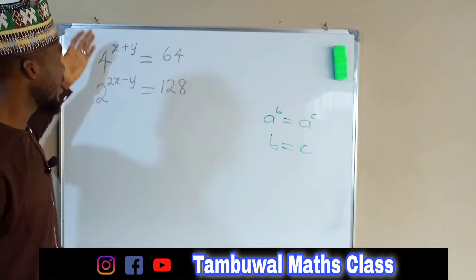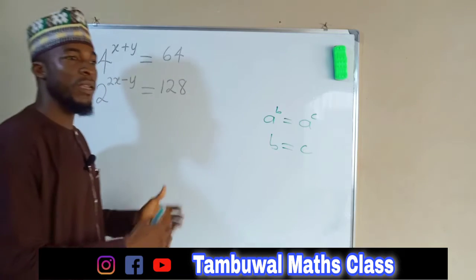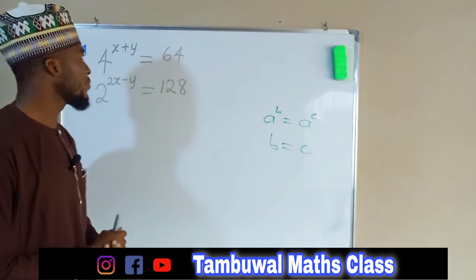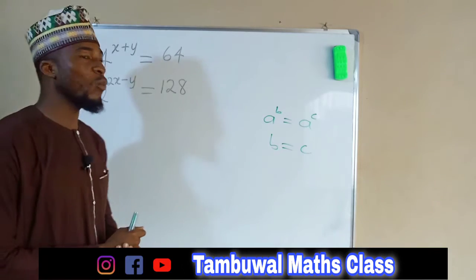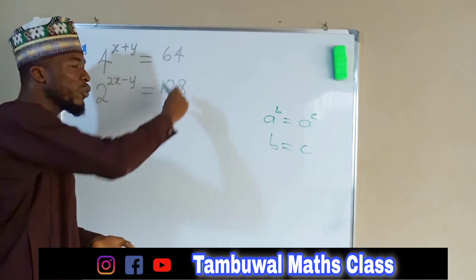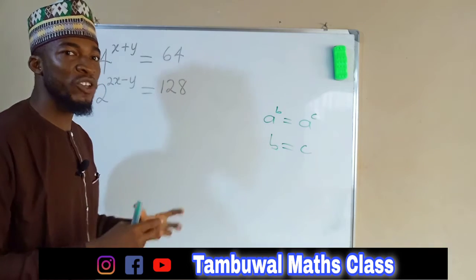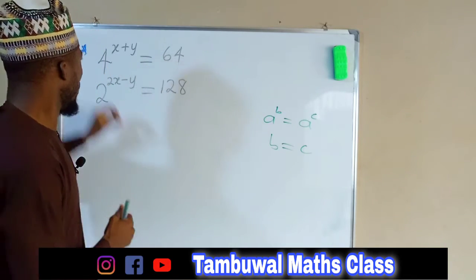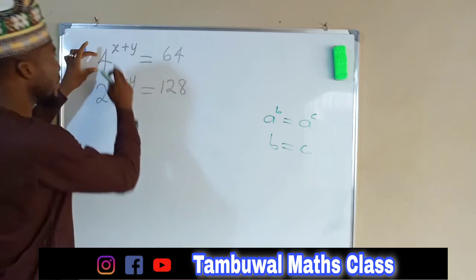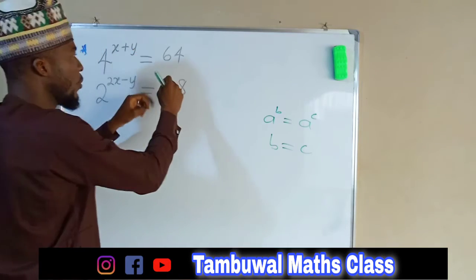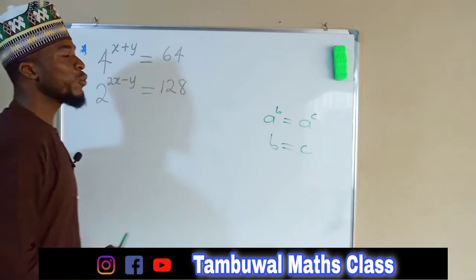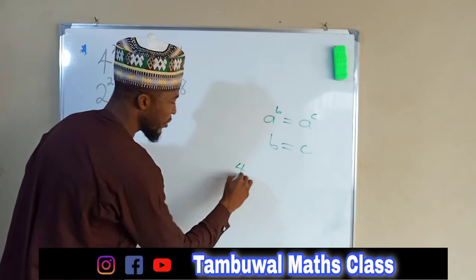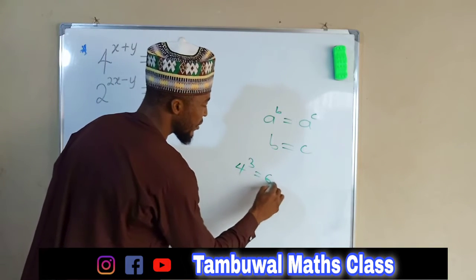So what we have here, the left hand side is written in an index form, but on the right hand side we have a whole number. So what we are going to do is transform these whole numbers to an index form in such a way they will have the same basis. Here we have 4 to the power of X plus Y. We want to raise 4 to a particular number that will give us 64. And we know that 4 to the power of 3 is equal to 64.